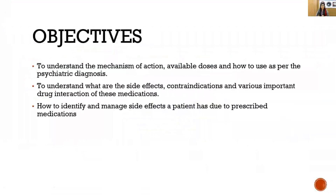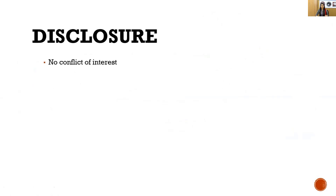The objectives of our course are to understand the mechanism of action, available doses, and how to use medications as per psychiatric diagnosis, to understand side effects, contraindications, and important drug interactions. We also aim to identify signs when a patient has to be prescribed medication. The medications discussed are not in the red zone and have no conflict of interest — this is for academic purposes only.